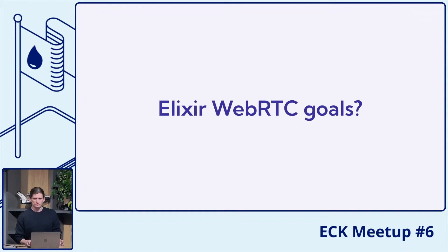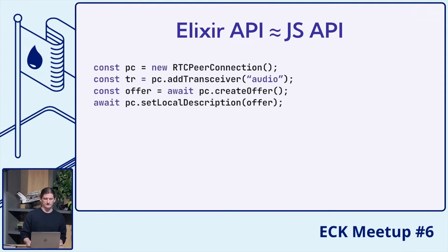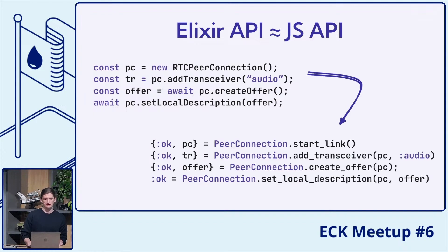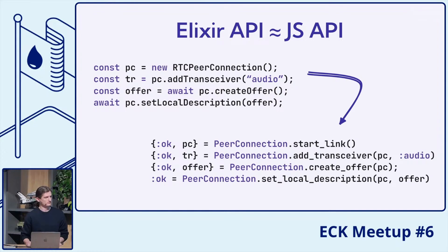So now we're really sure we want to implement WebRTC in Elixir. What are the goals of the project? Firstly, we want to keep the Elixir API as close to the JavaScript API as possible. So let's take this snippet in JavaScript — it maps directly to this snippet in Elixir. If you take a close look, you can notice basically one major difference: the peer connection in JavaScript is an object, but in Elixir it is a process. Except for differences like that, which we made to keep the Elixir implementation idiomatic, the APIs are basically identical. So if you're familiar with the WebRTC API, you'll feel right at home with the Elixir implementation.